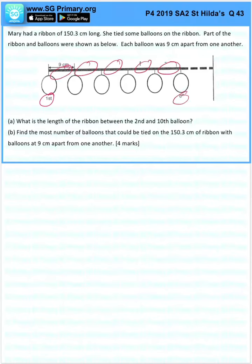1, 2, 3, 4, 5. So 6 minus 1 is 5 intervals.